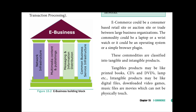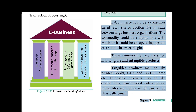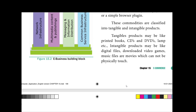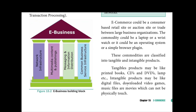Products in e-commerce are classified into two types: tangible and intangible. Tangible products can be physically touched — for example, printed books, CDs, DVDs, and lamps are tangible products. Intangible products cannot be physically touched — for example, digital files, downloadable video games, and music files are intangible. This distinction is very simple and important.